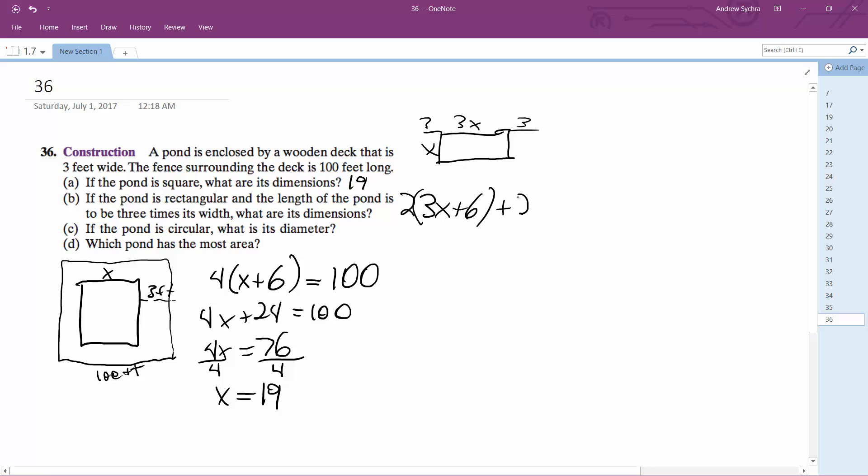So we'd have two of 3X plus 6, and then we'd have plus two of X plus 6. And that is equal to 100. So we'd have 6X plus 12 plus 2X plus 12 equals 100. So 8X is equal to 76.